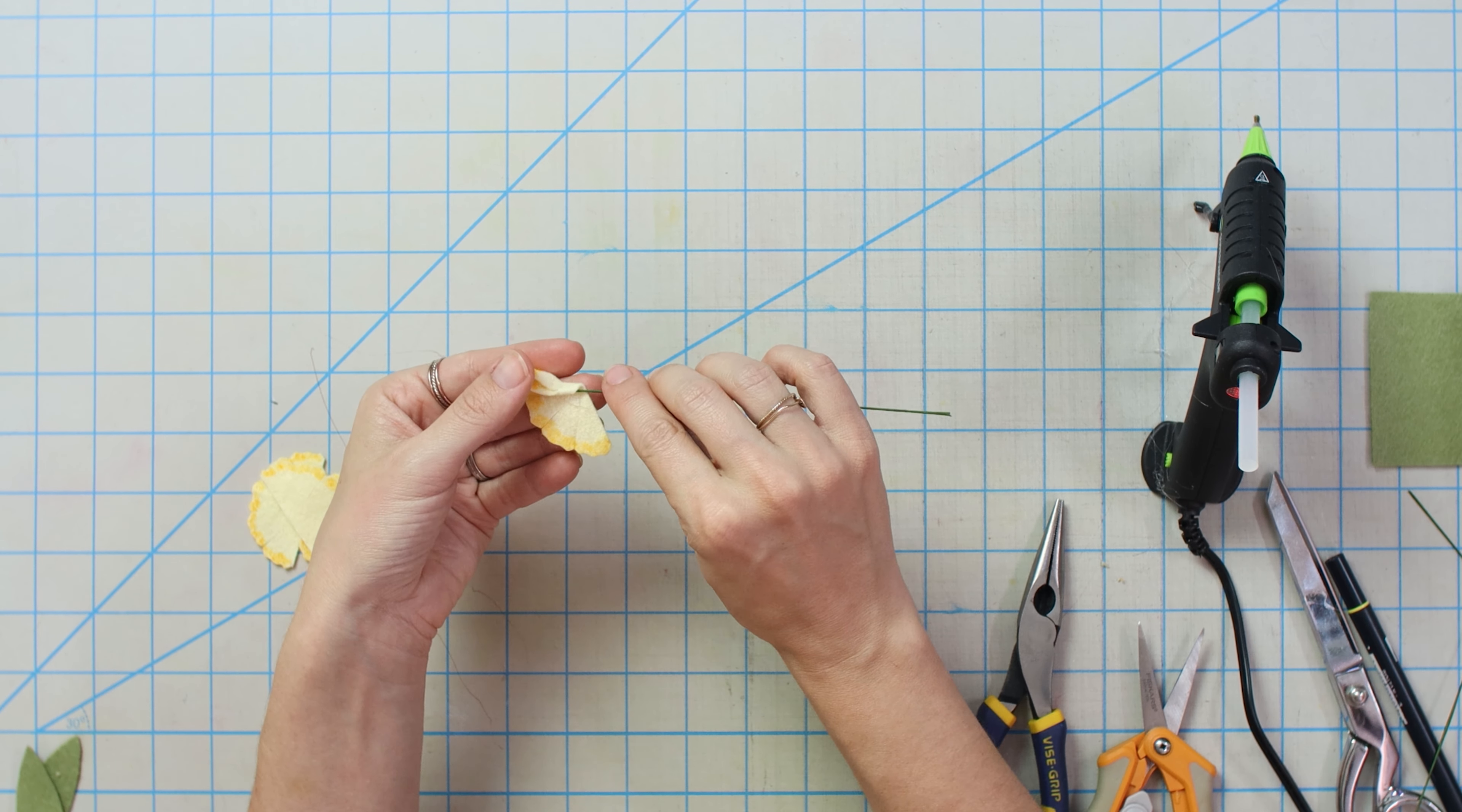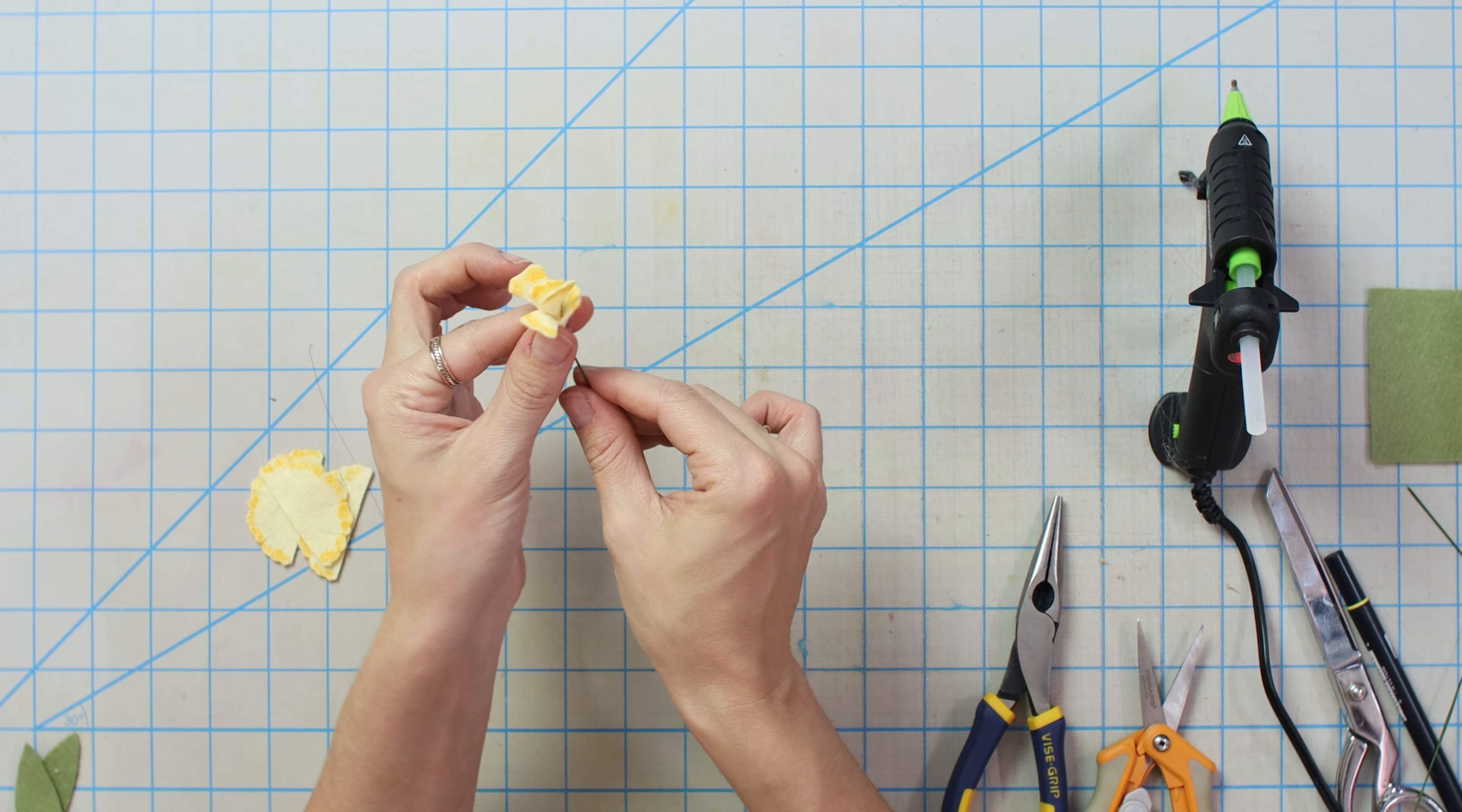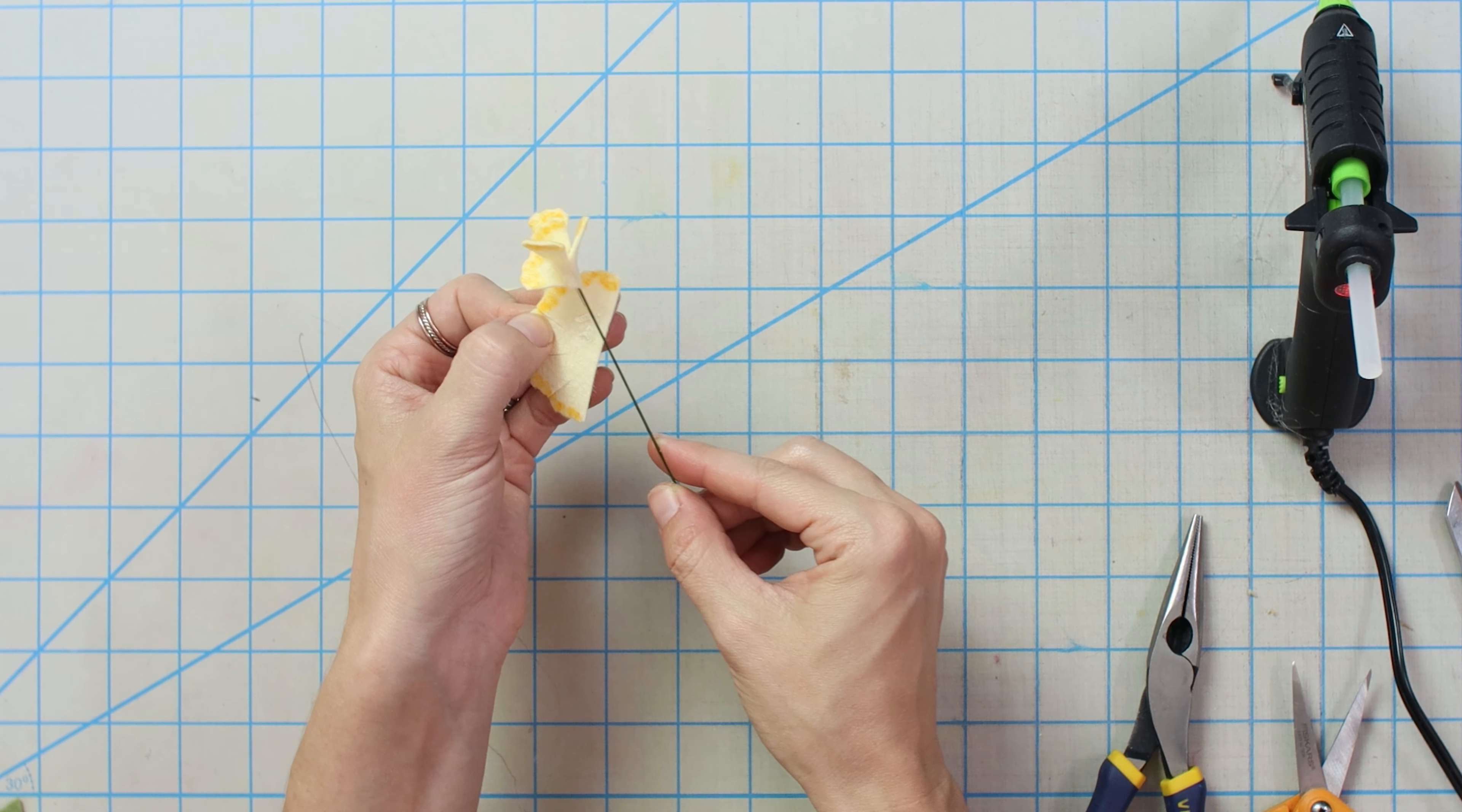So we're going to put a little bit of glue on those first two petals. Put our wire in it and we're going to kind of just sandwich it and kind of start wrapping it around. So we're going to put some more glue here. And then twist while also kind of bringing it down a little bit. You don't want it completely level the whole time.